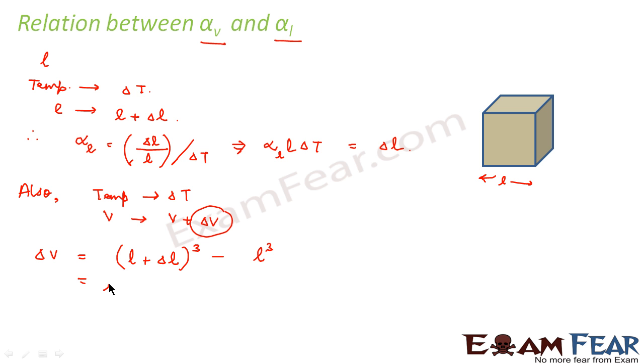So this we can write as (a plus b) whole cube. So a cube plus b cube plus 3ab(a plus b), this minus l cube. So l cube and l cube will get cancelled.